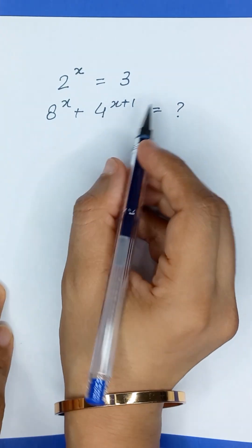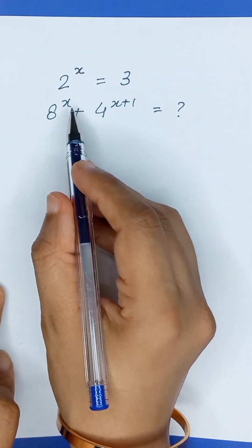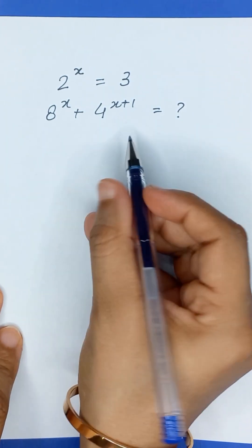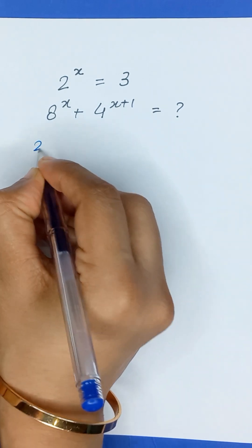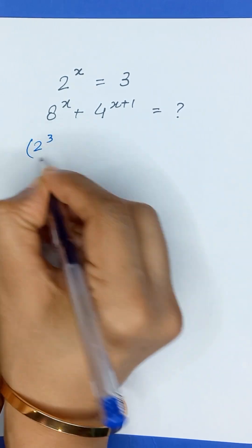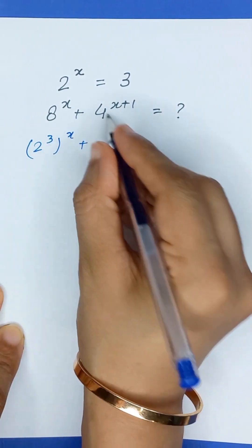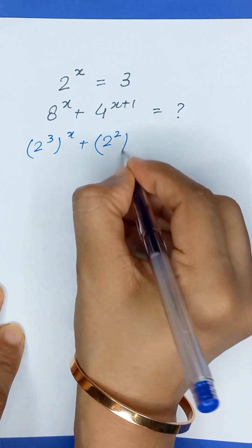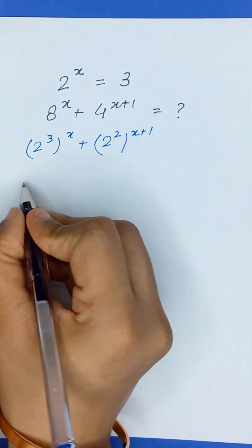Given that 2 to the power x is equal to 3, we have to find the value of 8 to the power x plus 4 to the power x plus 1. This can be written as 2 to the power 3, raised to the power x, plus 2 to the power 2, raised to the power x plus 1.